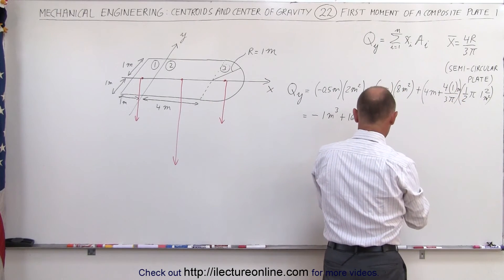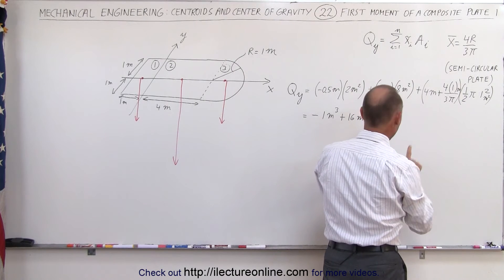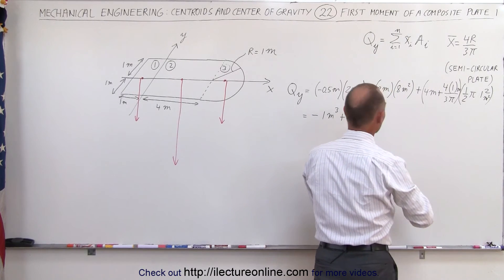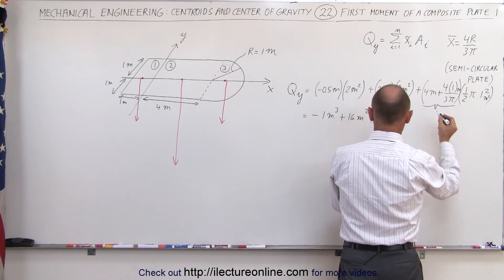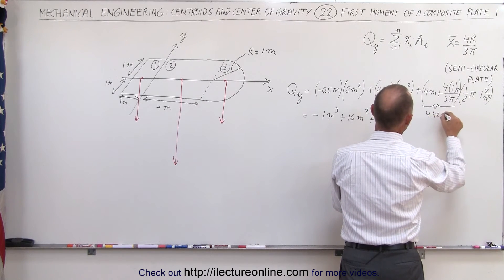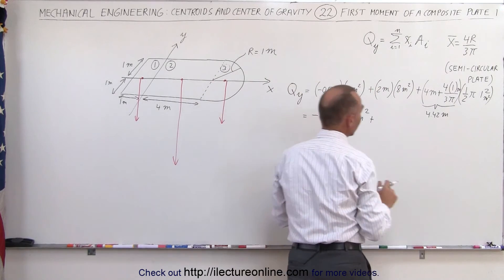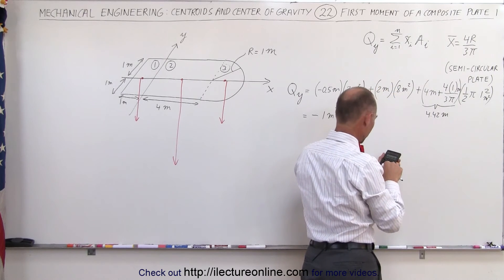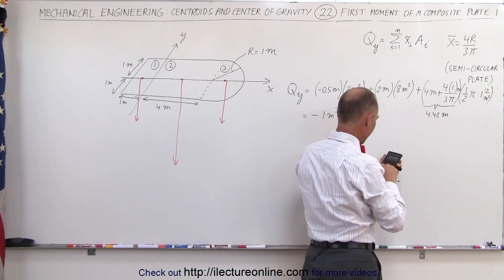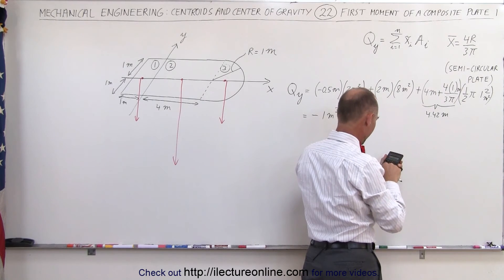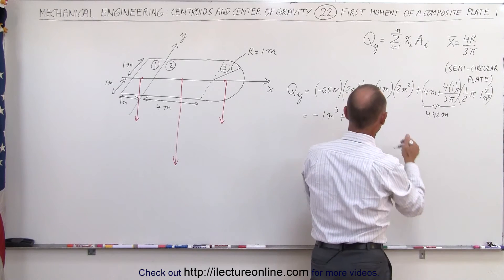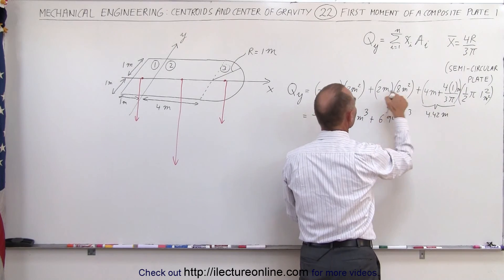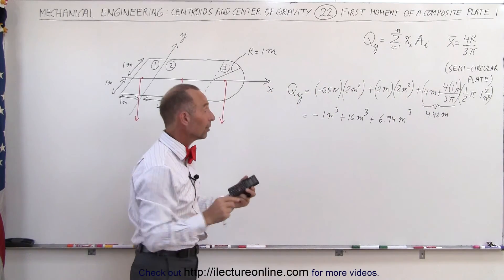4 divided by 3 divided by π, add that to 4, which means that the center mass of that semicircular piece is located at 4.42 meters to the right of the y-axis. Multiply that times 1/2 times π, we get 6.94 meters cubed, and this should be meters cubed because it's meter times meters squared. I can now go ahead and add all that together.